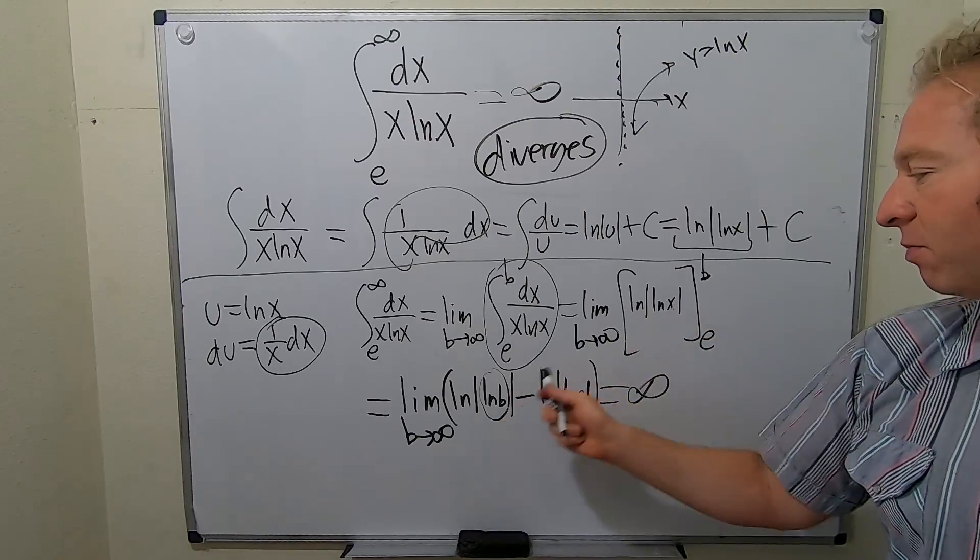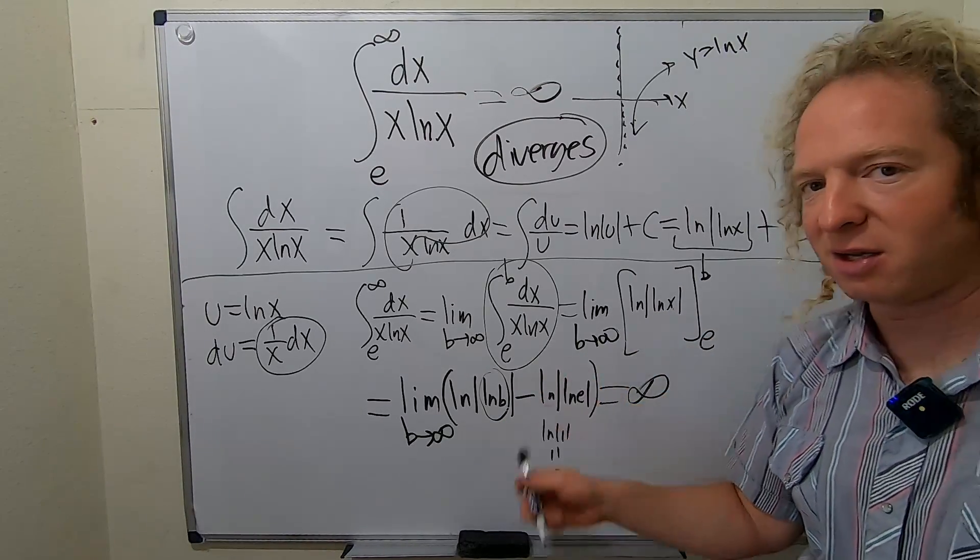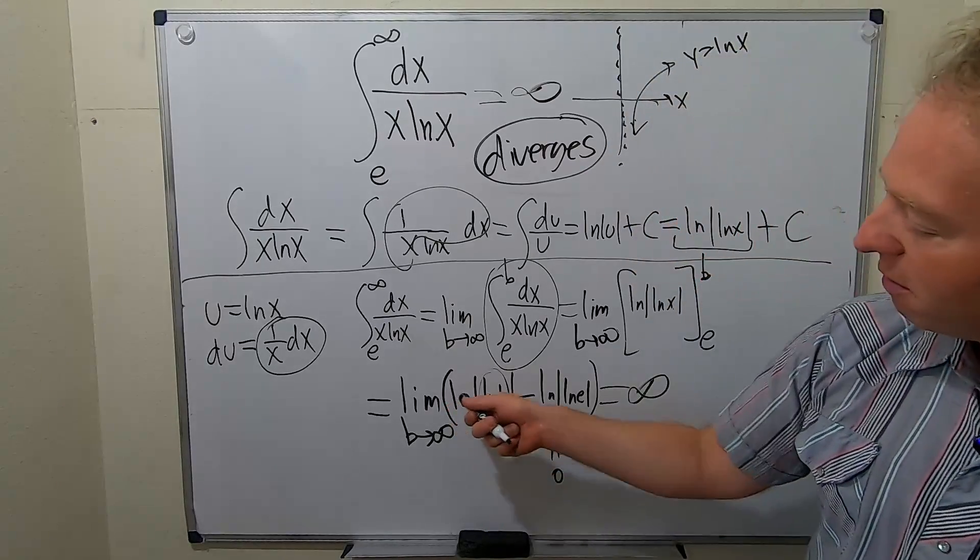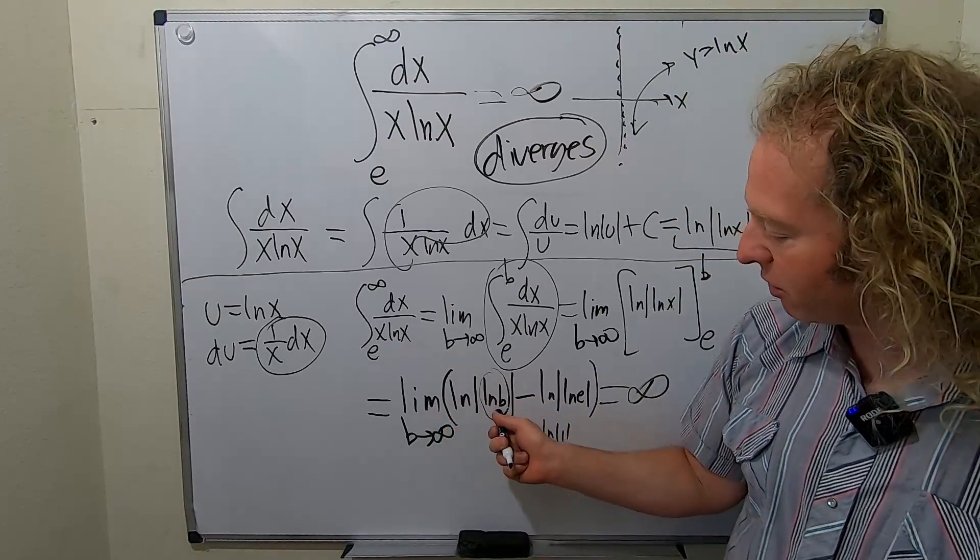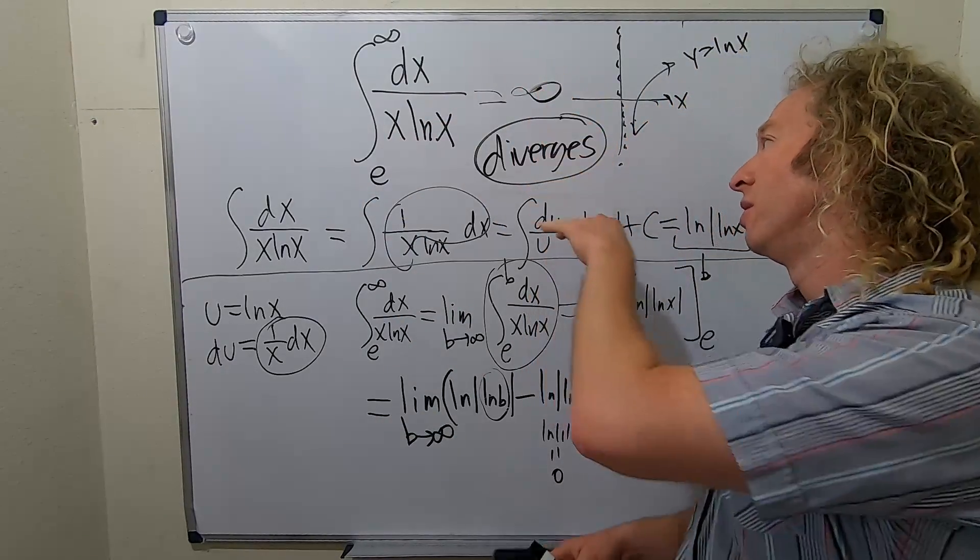Plug in b, subtract, plug in e, subtract again. This piece here is ln one, which is actually zero, so that's not even relevant in the problem. But this goes to infinity, so the ln of something going to infinity is also going to infinity. So you get infinity.